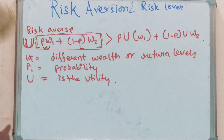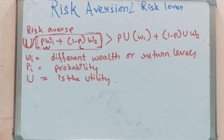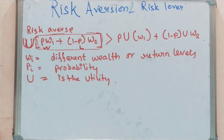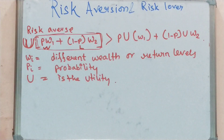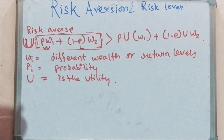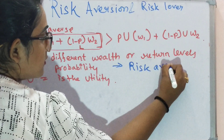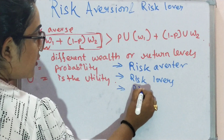Before getting into details, different individuals behave differently in their choices to any given expected payoff for any case of contingent consumption. Some individuals are forward in taking the risk while some are against it and some are indifferent. We have three categories: the risk averse, the risk lovers, and the risk neutral.